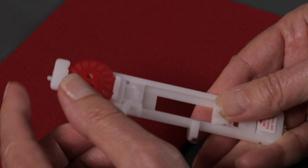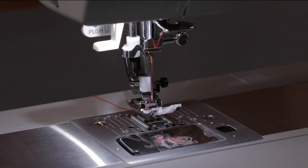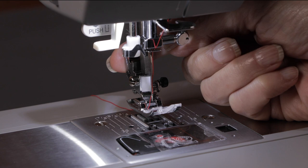By placing the button in the back of the buttonhole foot the machine will know how to make the buttonhole exactly the right size for that button. Now we're ready to place the foot on the machine.